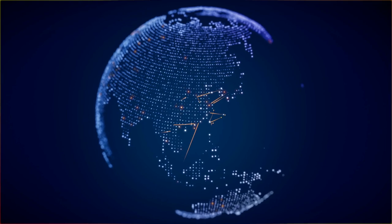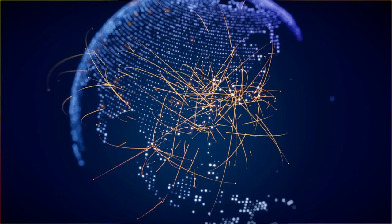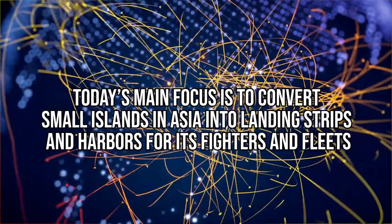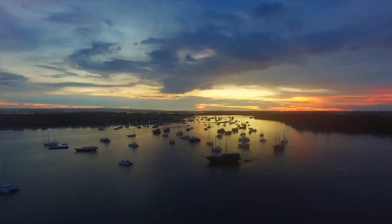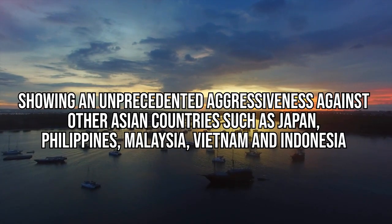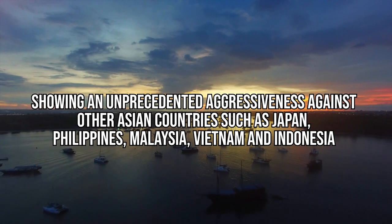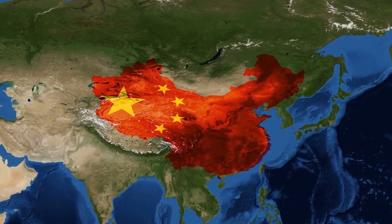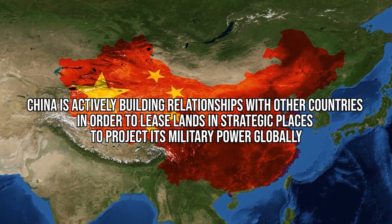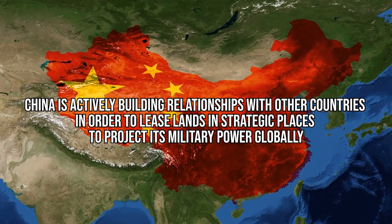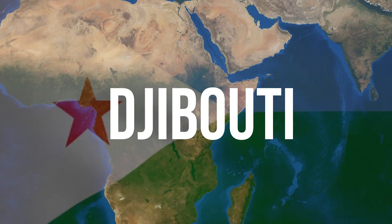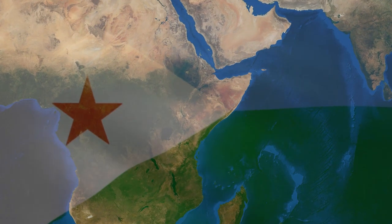China has also undertaken an expansion plan of military bases globally. Today's main focus is to convert small islands in Asia into landing strips and harbours for its fighters and fleets. This task has been achieved showing an unprecedented aggressiveness against other Asian countries such as Japan, the Philippines, Malaysia, Vietnam and Indonesia. In addition, China is actively building relationships with other countries in order to lease lands in strategic places to project its military power globally. The first base has already been built in Djibouti and China is in negotiations with other countries to secure more army bases worldwide.